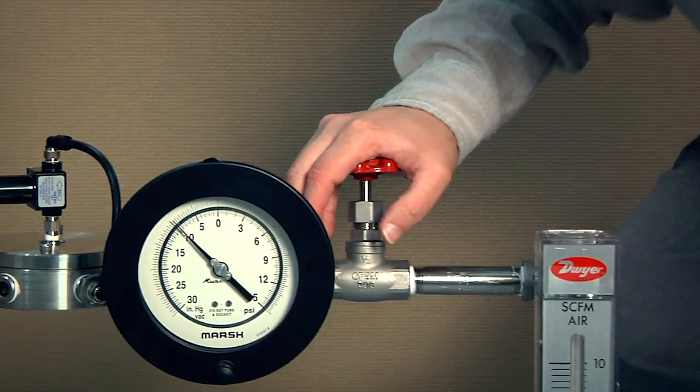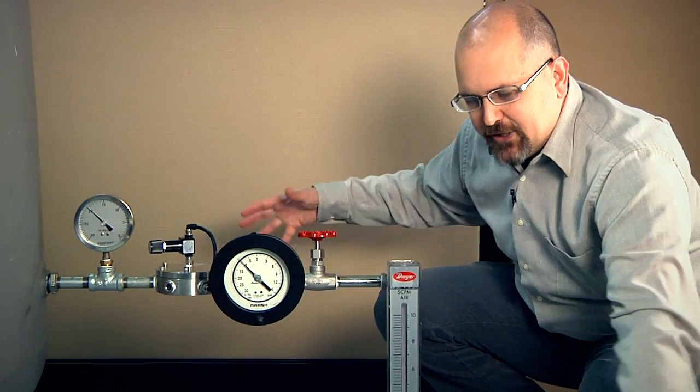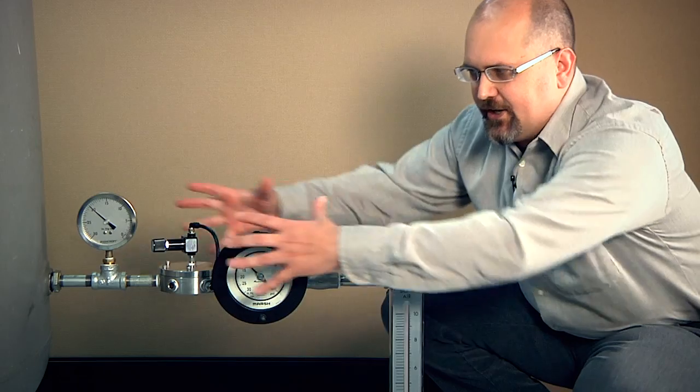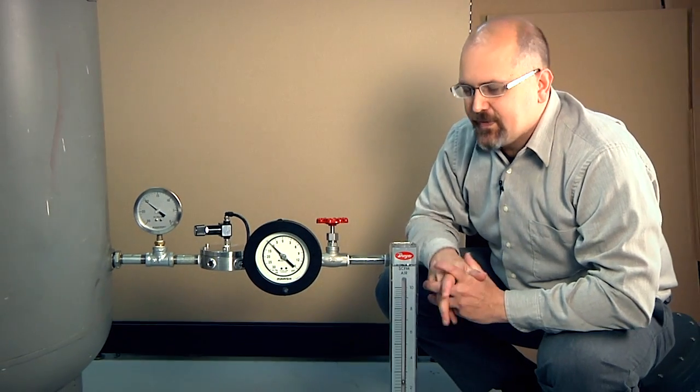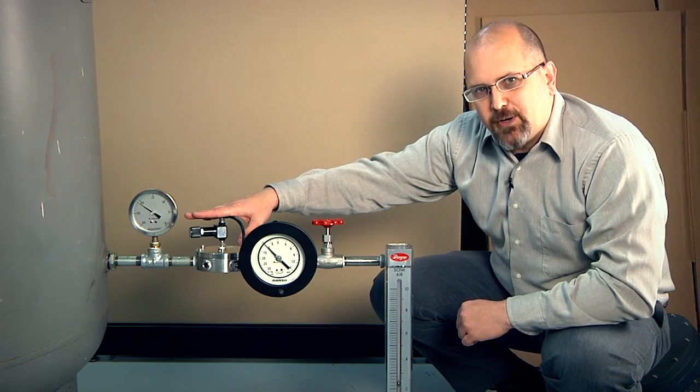Right now the system is flowing about 2 SCFM. So I've got 2 SCFM of atmospheric air being pulled into the system. But the system pressure is being dictated by the Equilibar vacuum regulator.